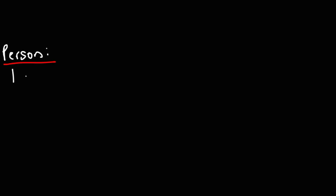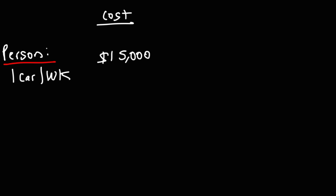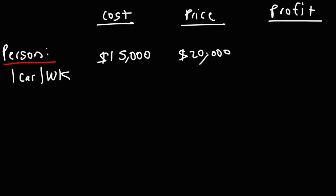Let's illustrate this. The individual person who makes one car per week might have to spend $15,000 on parts, labor, and everything that goes into building that one car. If the market value to sell that car is $20,000, his profit for making one car in one week is $5,000.